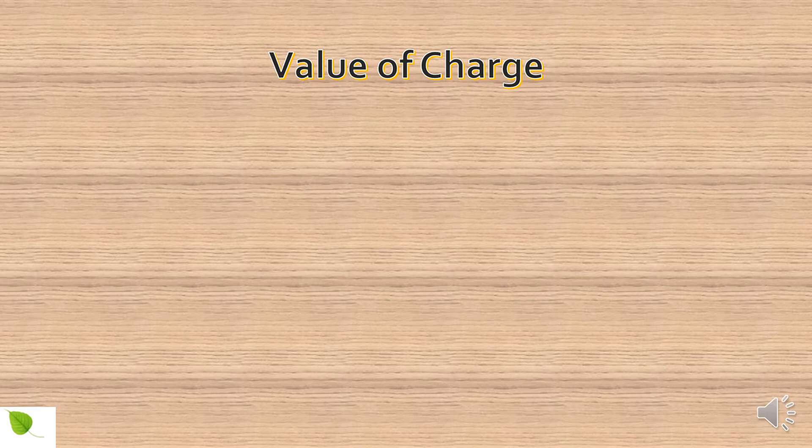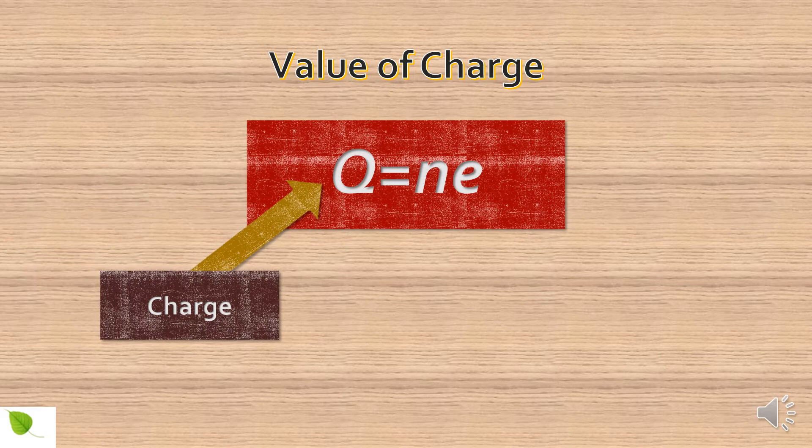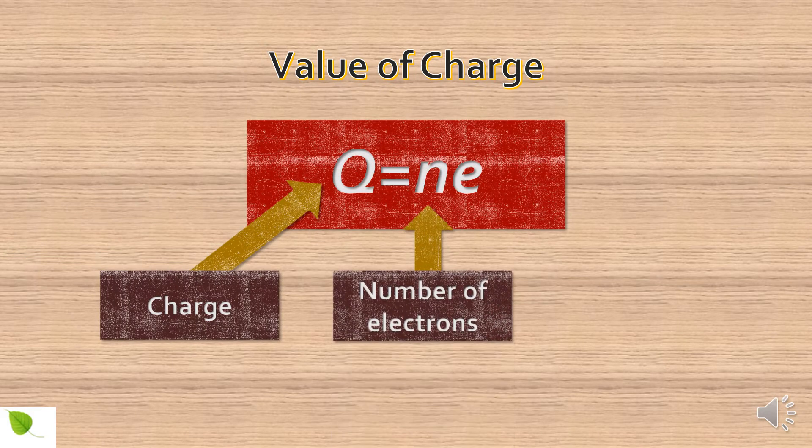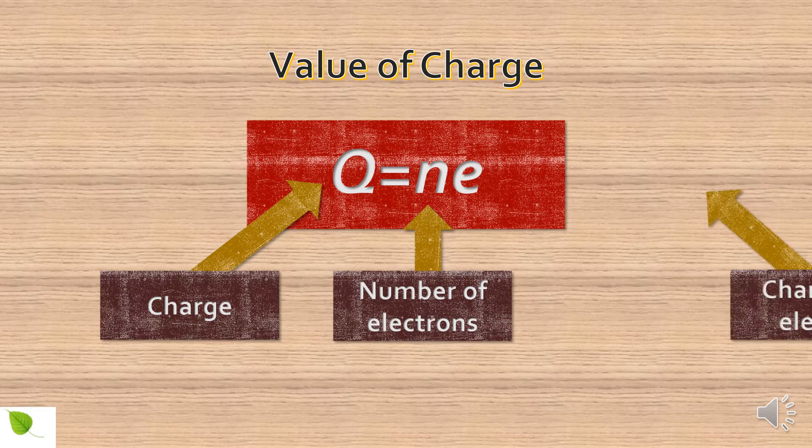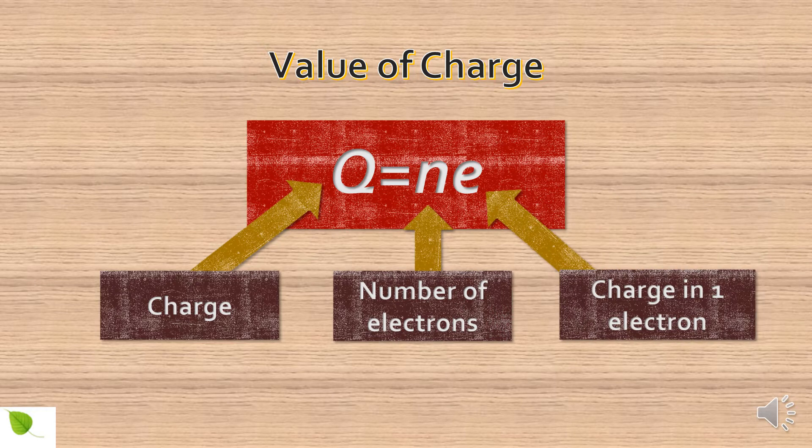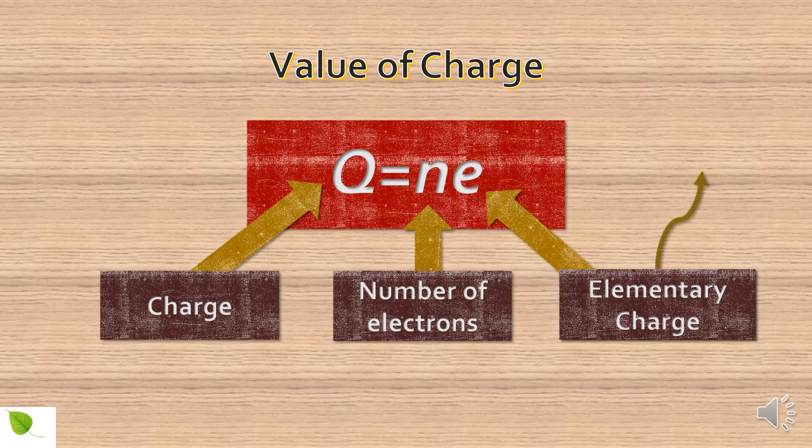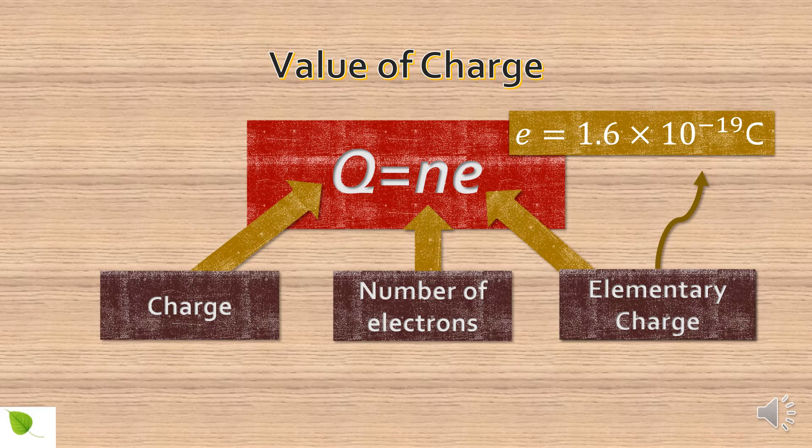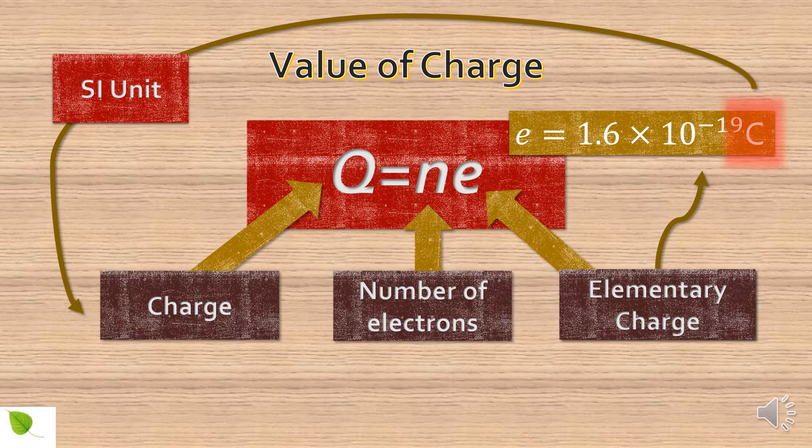The value of charge can be found using Q equals Ne, where n is the number of electrons and E is the charge in one electron or the elementary charge. The value for E is 1.6 into 10 raised to minus 19 coulomb. C is the SI unit for charge.